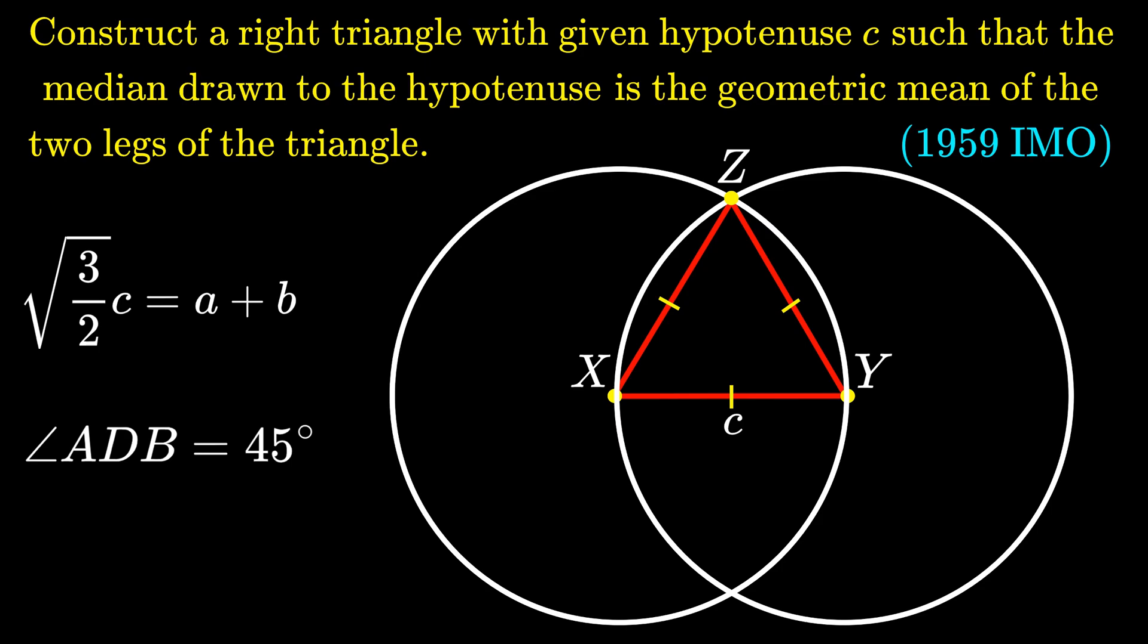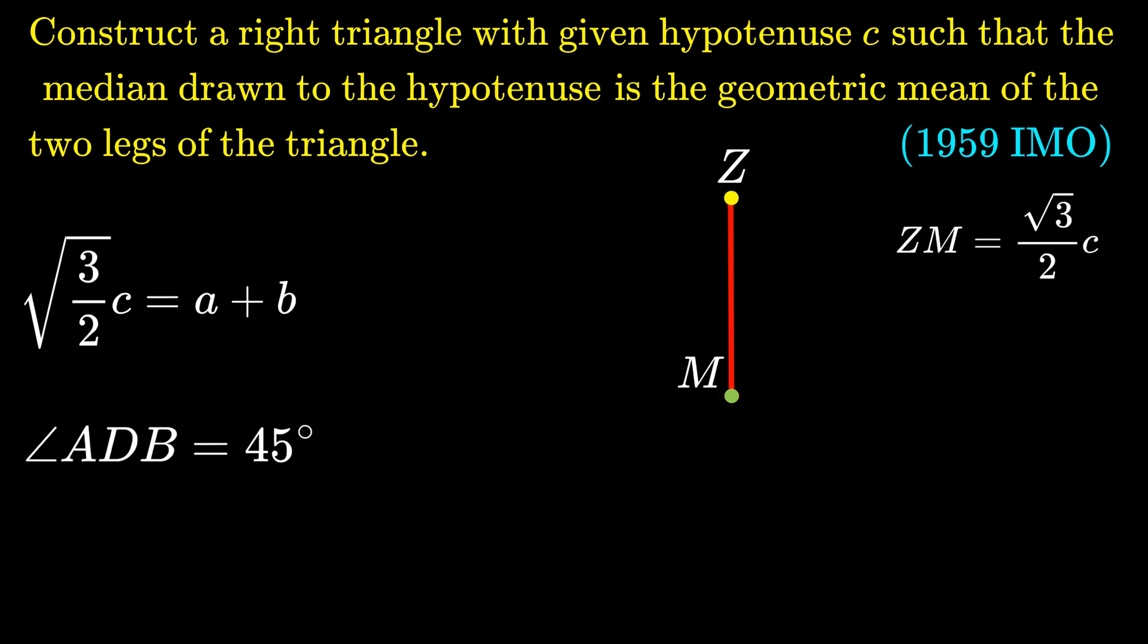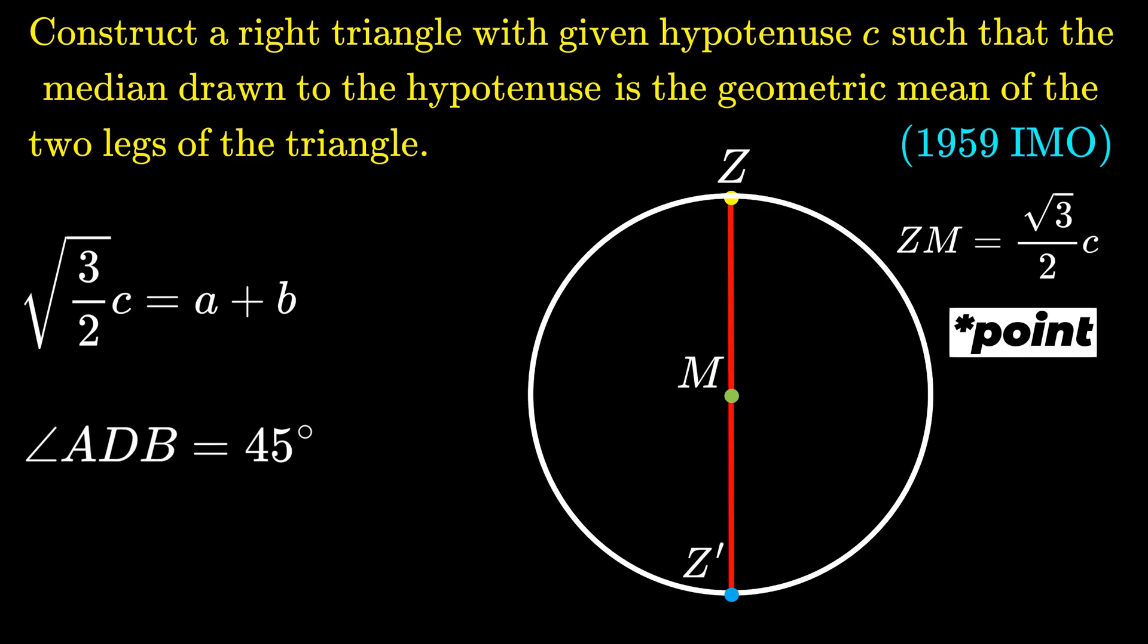Now if we construct a perpendicular from point Z to segment XY, we have the length ZM equal to √(3/2) · C. Now take the length ZM; we can draw a circle with radius ZM centered at point M and let Z' be the antipodal point of Z.